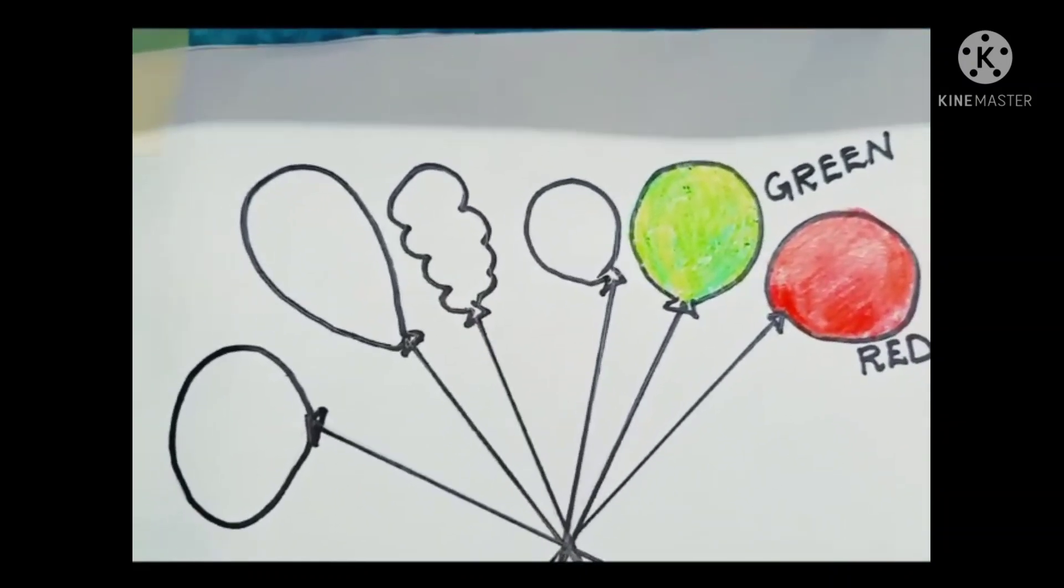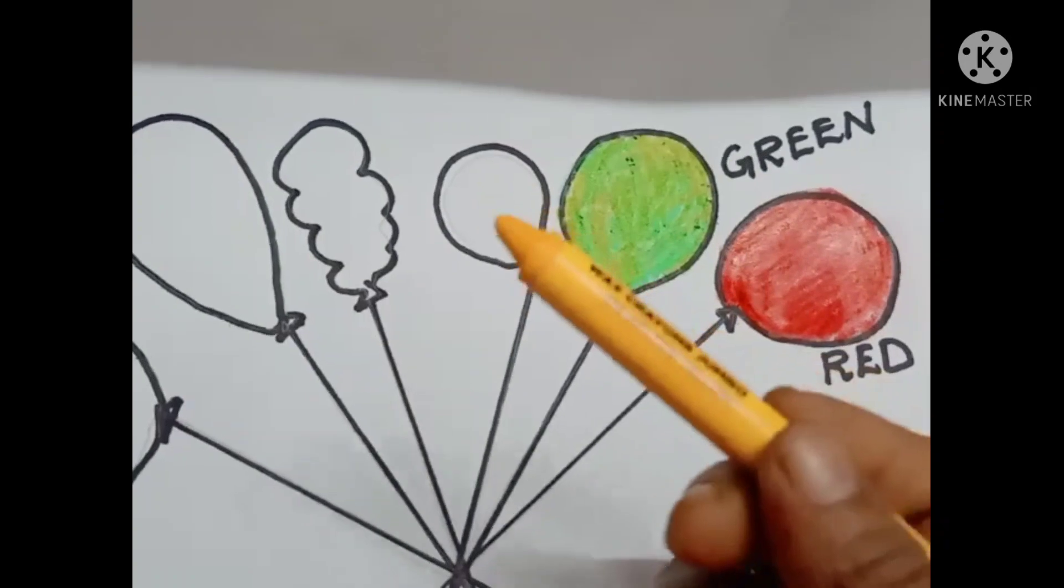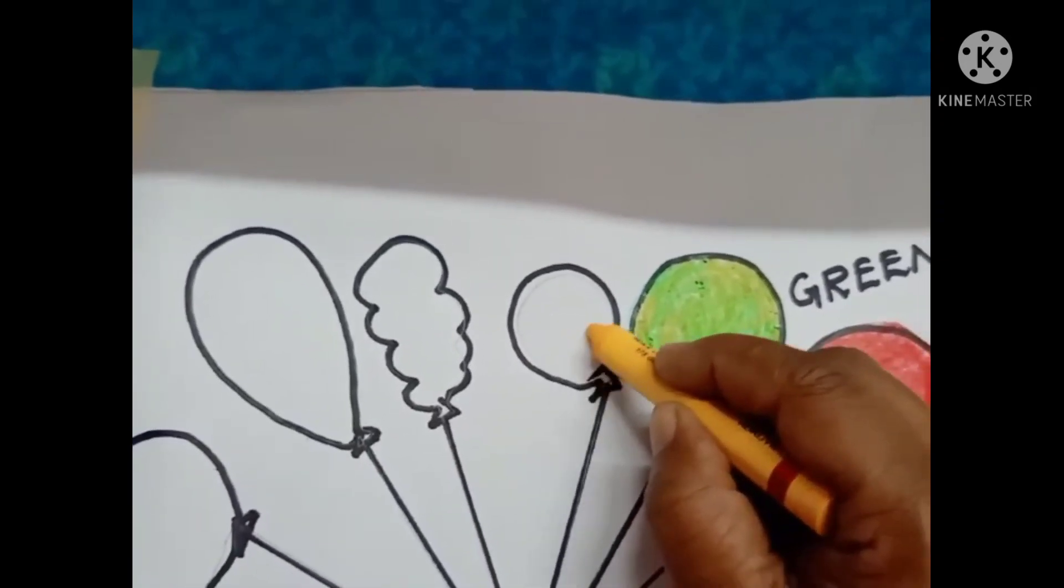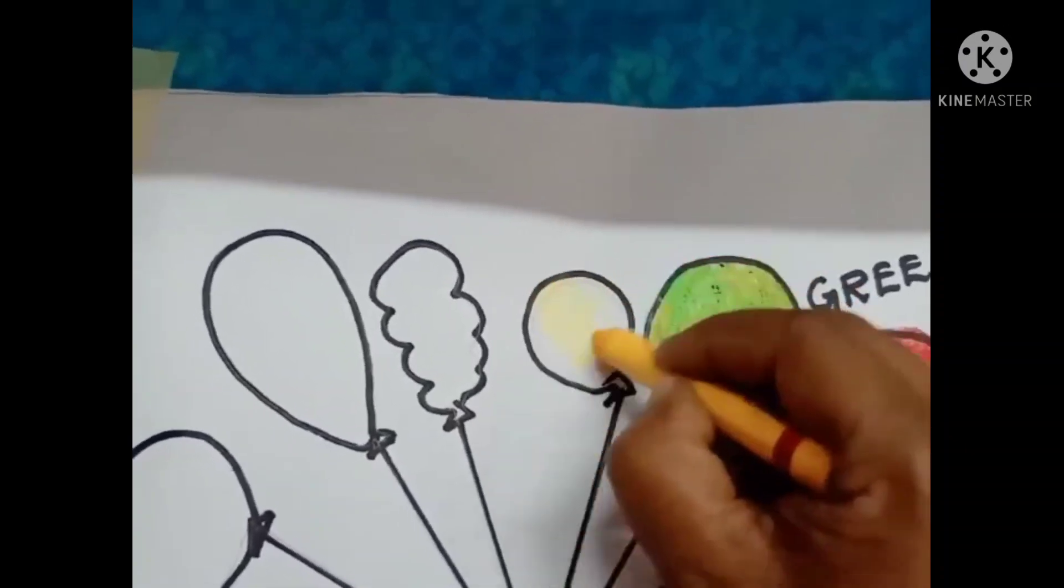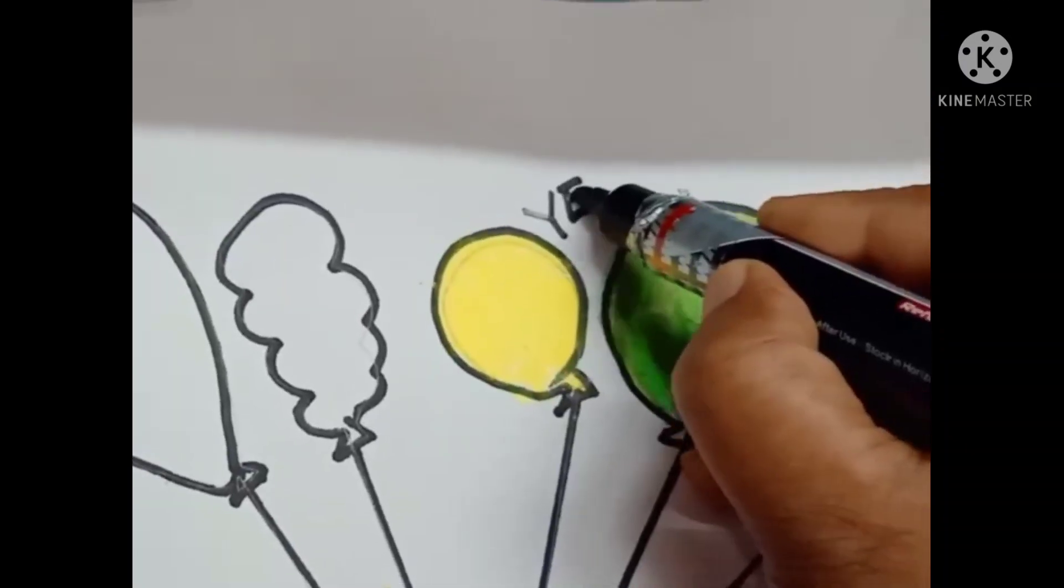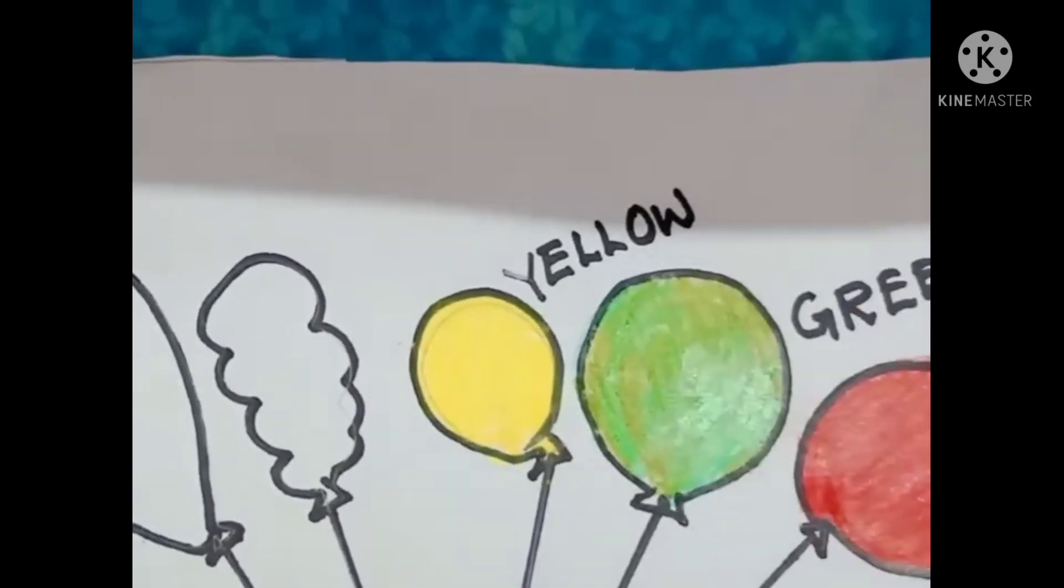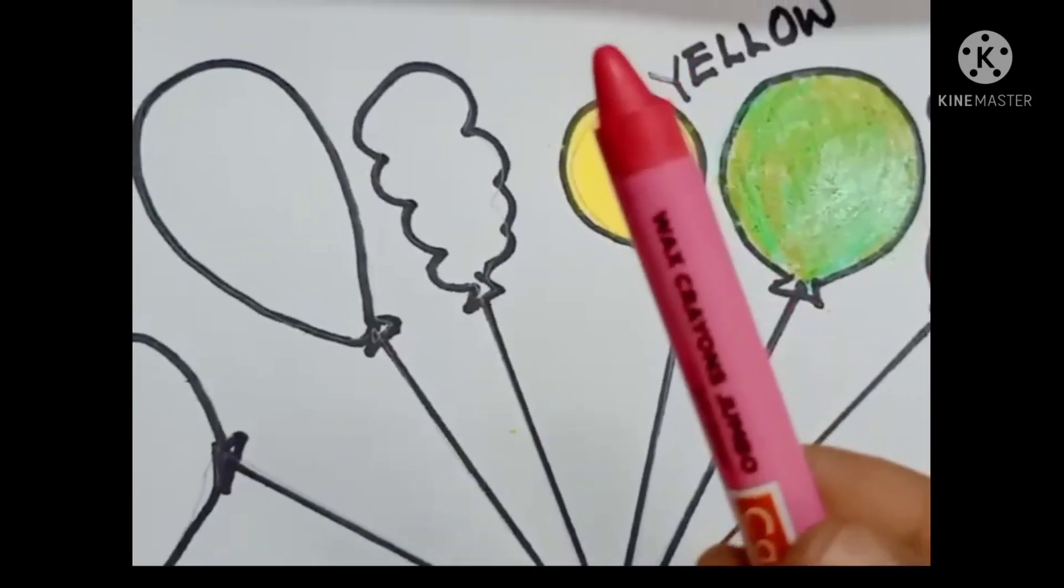Then take another one. Which color is this? This is yellow. And color it. Yellow color balloon. Write the spelling of yellow. Y-E-L-L-O-W.